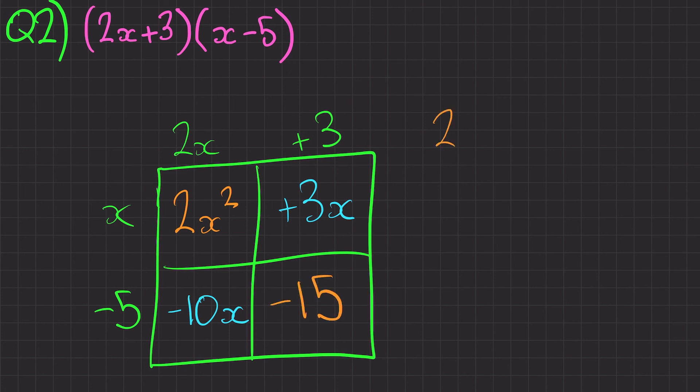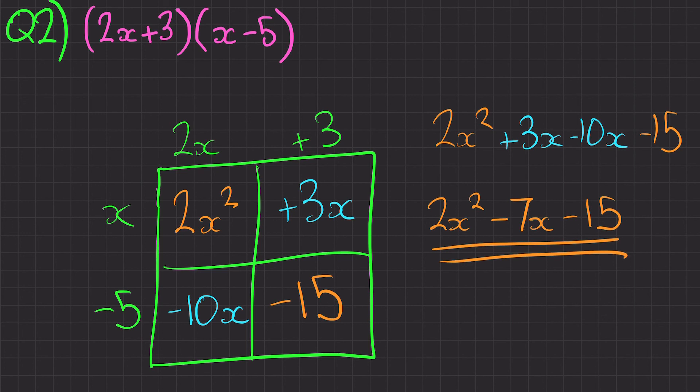Write it out. So 2x squared plus 3x minus 10x minus 15. We've expanded the brackets and now all we need to do is simplify. So our final answer will be 2x squared minus 7x minus 15. And there is our final answer expanded and simplified.